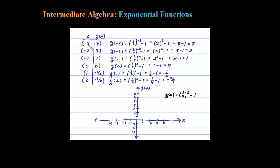We have negative 3 comma 7, negative 2 comma 3, negative 1 comma 1, and 0 comma 0.